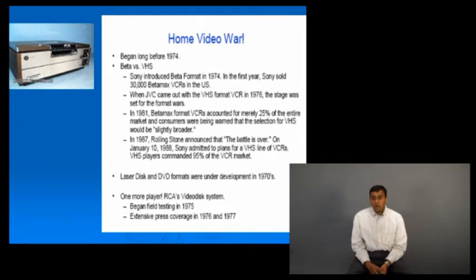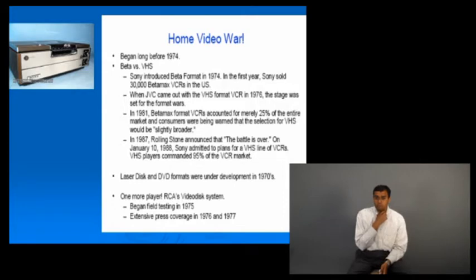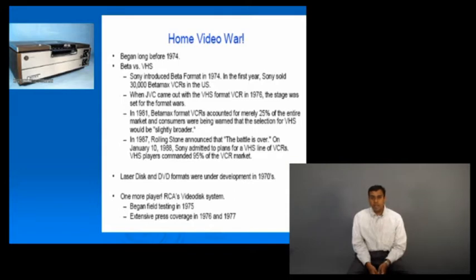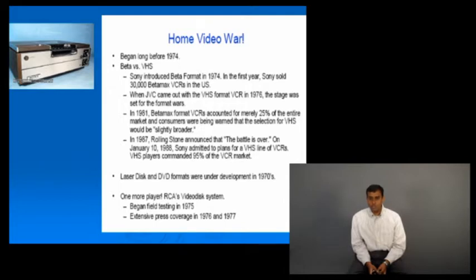By 1981, VCRs had accounted for about 25% of the market, and consumers were being warned that VHS would have broader availability. By 1987, Beta had lost out, and Sony actually started to introduce its own VHS line in its VCRs.